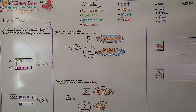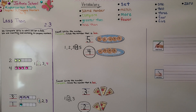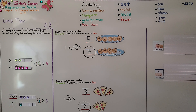So, less than means fewer than. It means not as many. A set with fewer objects is smaller in number than a set with more objects. Our next lesson, 2.4, we're going to compare by matching sets to 5. I hope you're doing well. I'm proud of you for watching math videos, and I hope you'll join me next time. Bye!